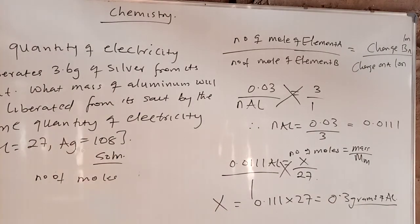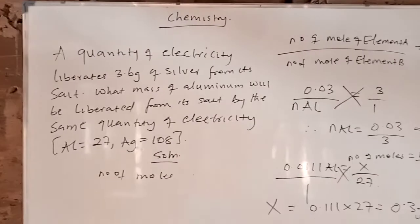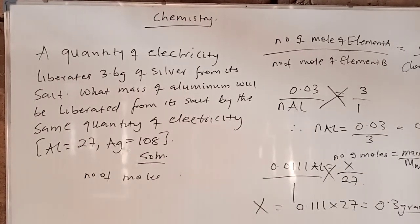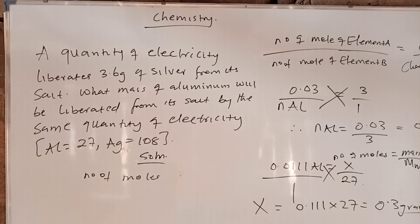To summarize: in the second law of electrolysis, the formula is number of moles of element A over number of moles of element B equals charge on B ion over charge on A ion. You are given the mass of silver, so you find its moles, insert into the formula to get moles of aluminium, then cross-multiply by the molar mass to get the mass. Thank you for watching — I will see you in another video.